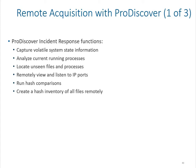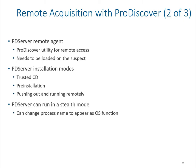ProDiscover's features include capturing volatile system state information and generating an initial investigative report about the condition of the suspect machine. It analyzes current running processes — important for detecting any software that might alert the suspect. It can also locate unseen files and processes running on remote computers, and remotely view and listen to open ports.